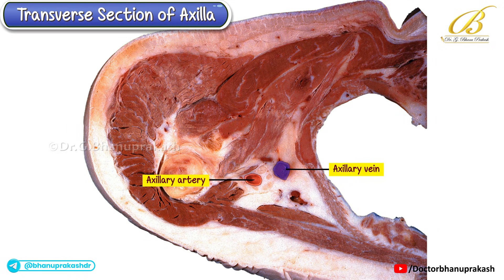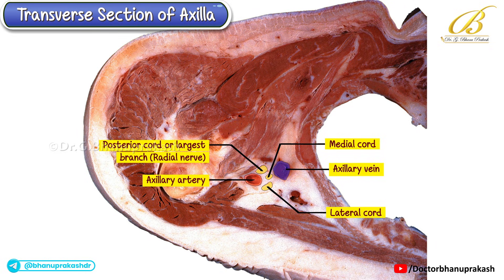Surrounding the artery, you can notice several whitish structures, which are the cords and branches of the brachial plexus. Although it's difficult to distinctly label each cord in this section, we can approximate their positions. The lateral cord lies lateral to the artery, the medial cord lies medial to it, and the posterior cord — or possibly its largest branch, the radial nerve — is located posterior to the artery. And that brings us to the end of the demonstration of the transverse section of the axilla.